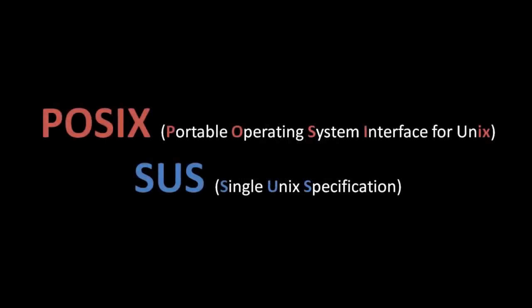We have all these variants of Unix, and none of them are exactly the same, which creates problems because ideally we would like to create a program and have it run on all variants of Unix. What we need is some standard that defines what it means to be a Unix system. So in the late 80s and early 90s, operating system developers got together and created two such standards: one called POSIX, which stands for Portable Operating System Interface for Unix, and one called SUS, or the Single Unix Specification. Today, most variants of Unix more or less conform to both of these standards, though there is quite a bit of divergence in the details.